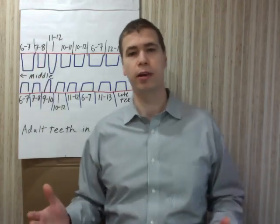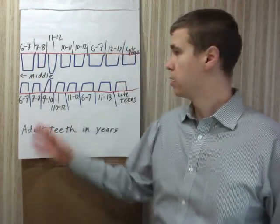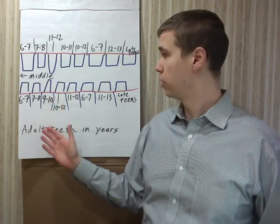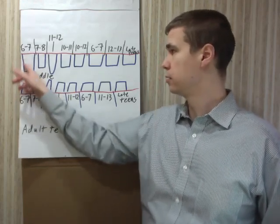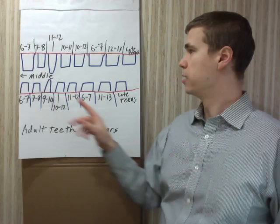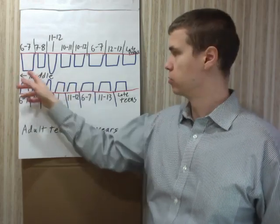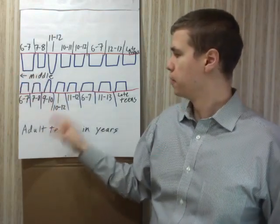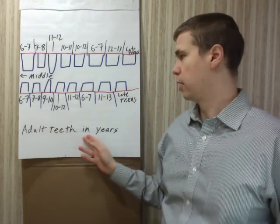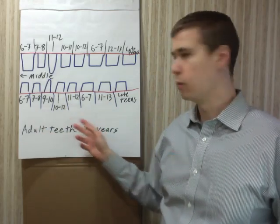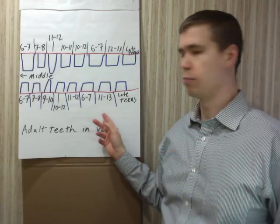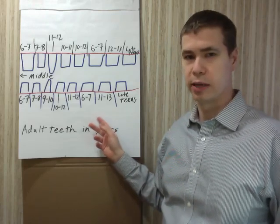Now I'm going to go through this chart of when teeth come in. So just to orient yourselves, this is the middle, and this is the outside. So instead of drawing each tooth twice, I only drew it once. And this is adult teeth. These numbers correspond to what age in years approximately when a child can expect to get the tooth.